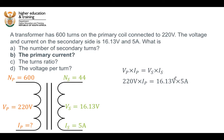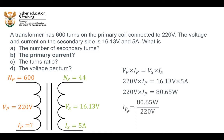Rearranging the equation, the power on the secondary side is equal to 80.65 watts. If we divide both sides by 220 volts, we find that the current through the primary coil is equal to 80.65 watts divided by 220 volts, which gives us 0.36659 amps, approximately equal to 0.37 amps. Part two has been completed.